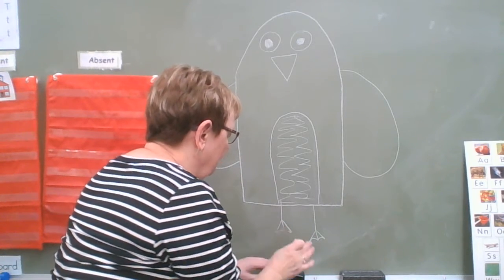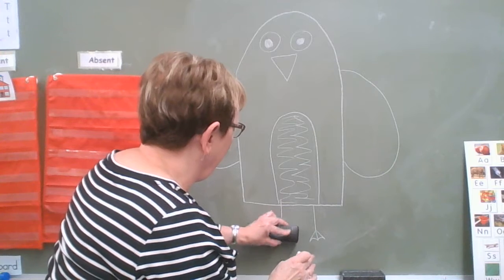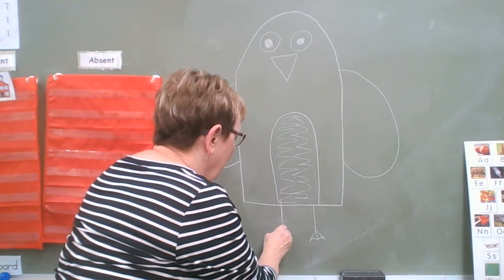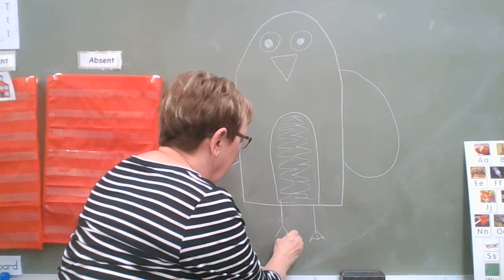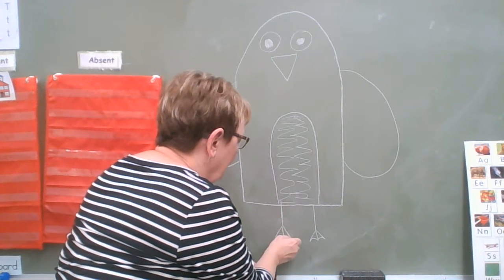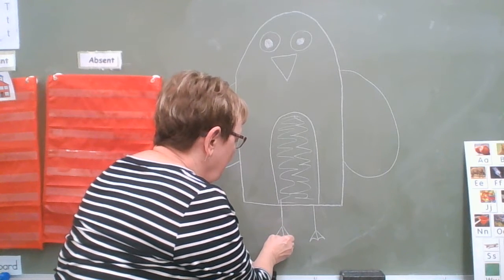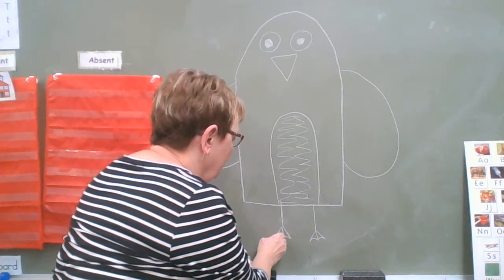This one didn't turn out very well. I'll try that again. So a line down, and then a line to the diagonal, and then curve up and curve over.